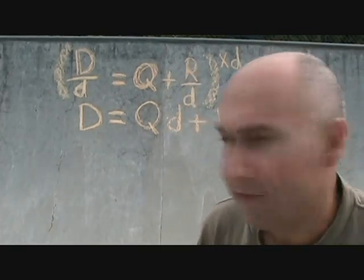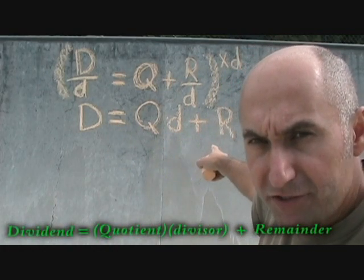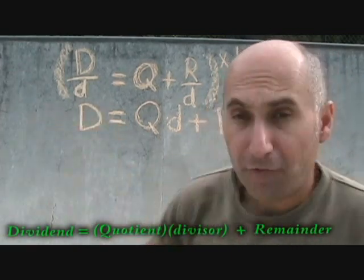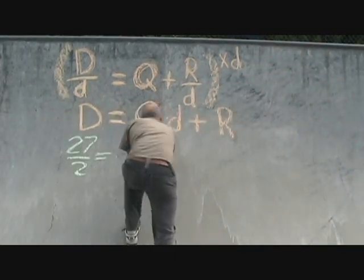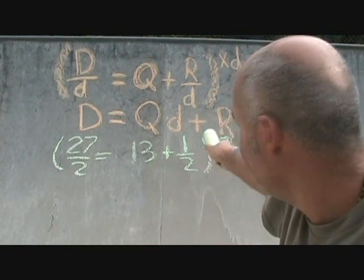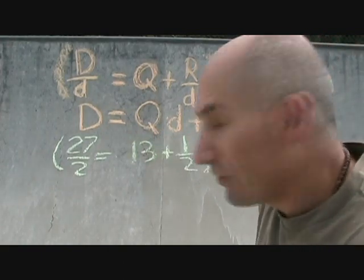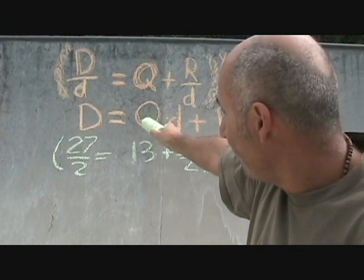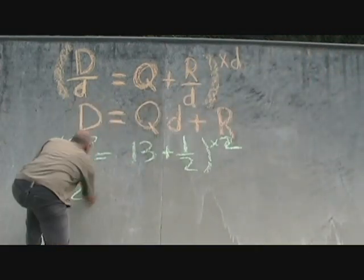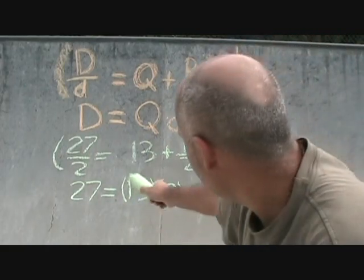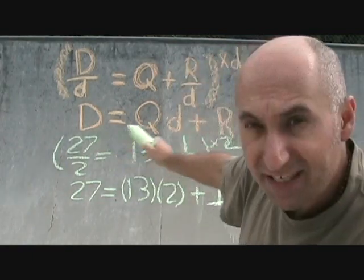What we're going to have is: D, your dividend, is equal to your quotient times your divisor plus your remainder. So basically, if we went back to our fraction, 27 divided by 2 — we have 27 over 2 is equal to 13 plus a half. We take that whole equation and multiply it by 2, and it reduces down to: your big D is 27, your Q is 13, your little D is 2, and your R is 1. So 27 is equal to 13 times 2 plus 1. This is our division statement.